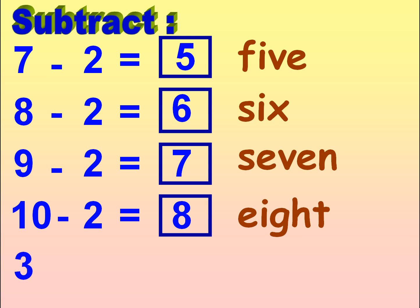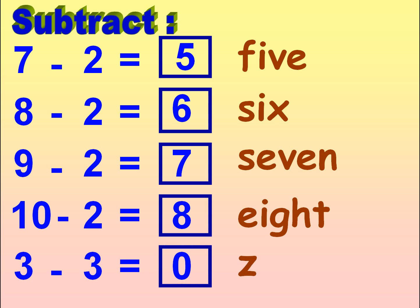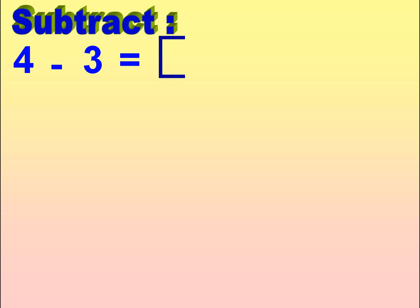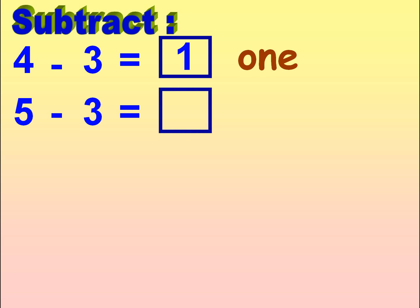3 minus 3 is equal to 0. Z-E-R-O, 0. 4 minus 3 is equal to 1. O-N-E, 1. 5 minus 3 is equal to 2. T-W-O, 2.